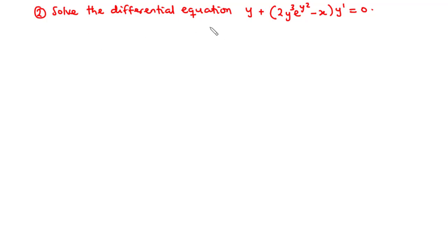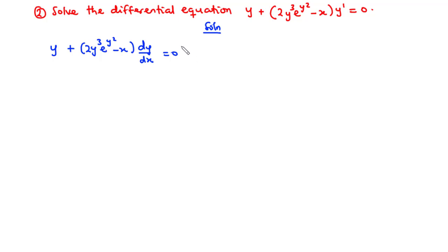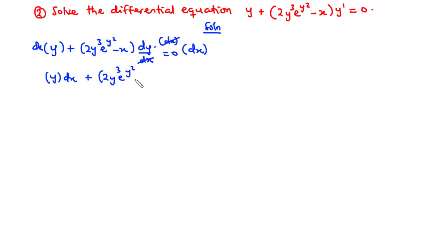Let's solve the second example. We are going to solve the differential equation y plus 2y³ times e to the power y² minus x times y prime equals 0. We can rewrite this as y plus 2y³ times e to the power y² minus x times dy/dx equals 0. We multiply each term by dx to eliminate the fraction, giving us y dx plus 2y³ e to the power y² minus x dy equals 0.